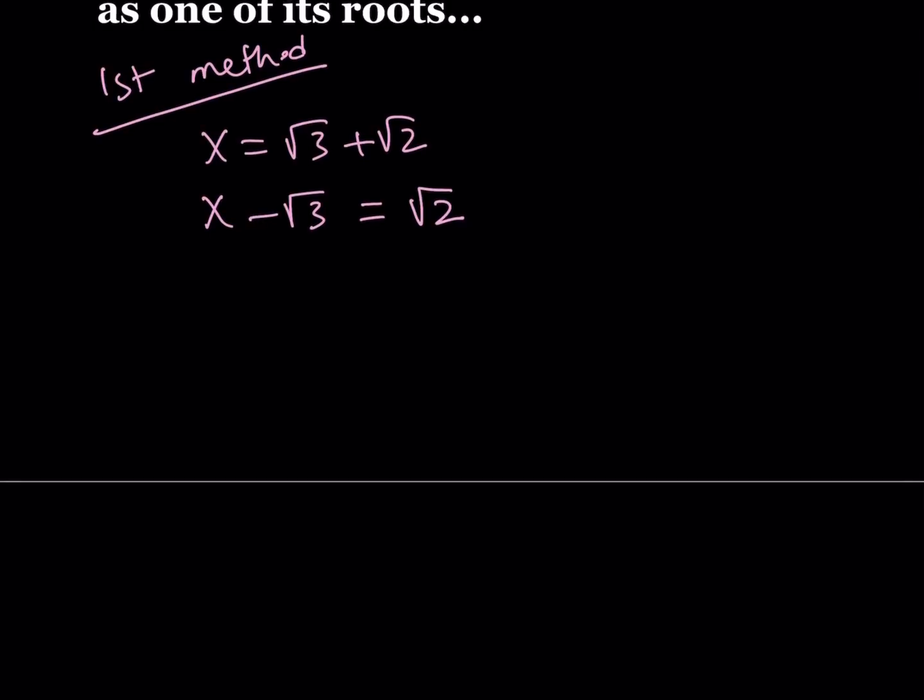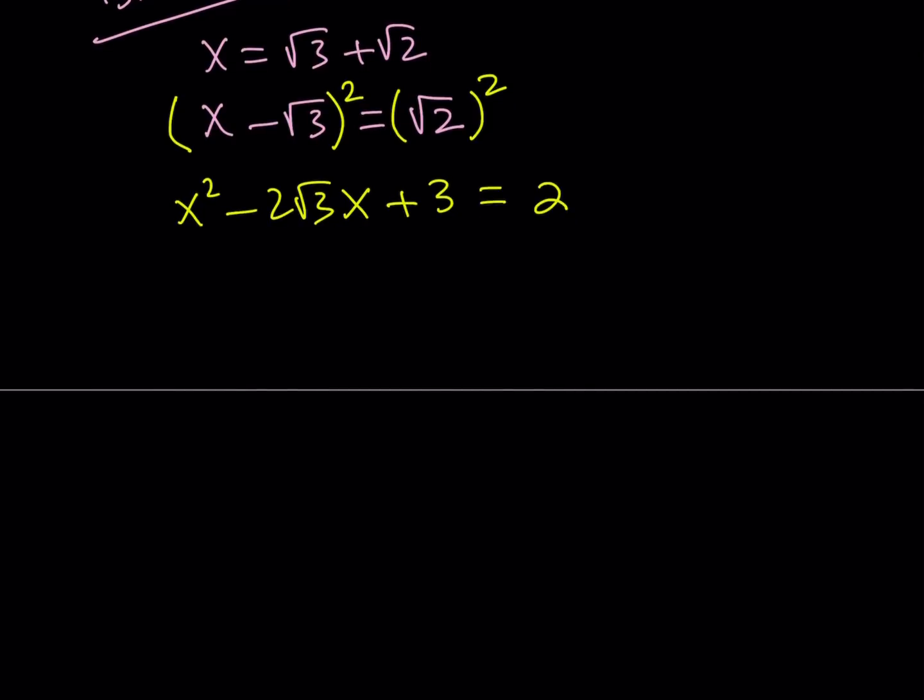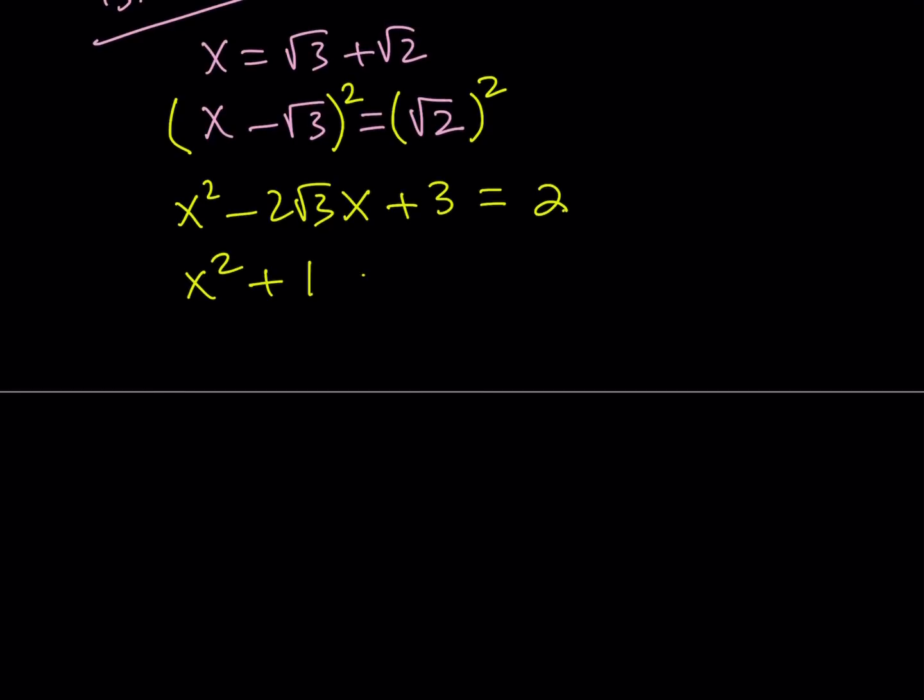My second method is going to be a little different. So now what am I going to do next? I want to find the polynomial equation with integer coefficients. Obviously, I don't want irrational numbers. So let's go ahead and square both sides. Kind of like rationalizing it, but by squaring. And this is going to give us x squared minus 2 root 3 x plus 3 equals 2.